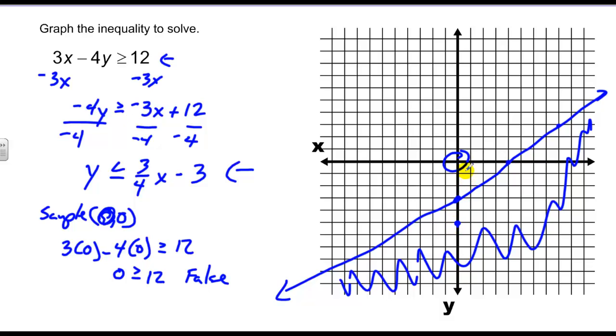Let's pick this point right here, which is zero and negative five. So let's plug zero, negative five into this equation. If I go three times zero minus four times negative five and see if that's greater than or equal to 12. Negative four times negative five is 20, and that should be greater than or equal to 12, and it is. So my graph must be done correctly.